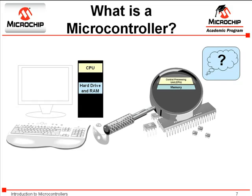A microcontroller also has memory, just as your PC has a hard drive or RAM. The memory allows the microcontroller to store information so that it can be used at a later time. Just like your PC, a microcontroller's memory is also used to store programs that are specific to that single task we spoke about earlier.